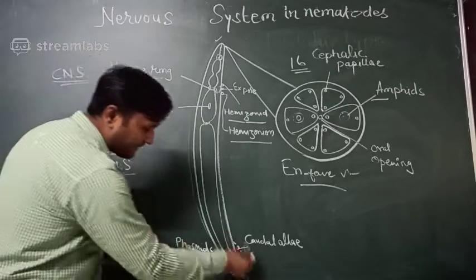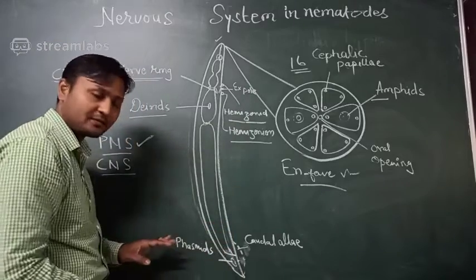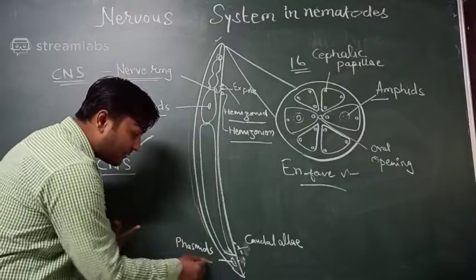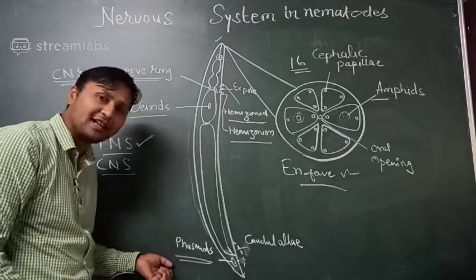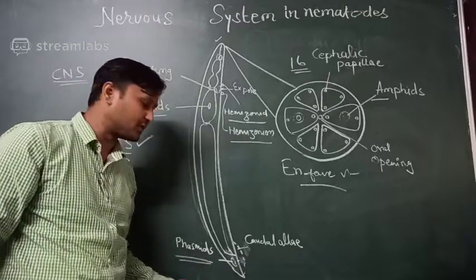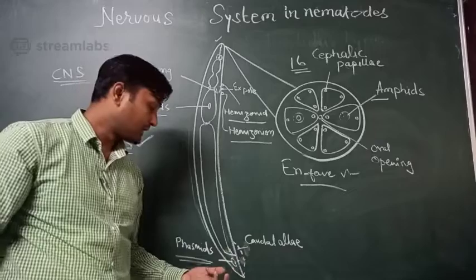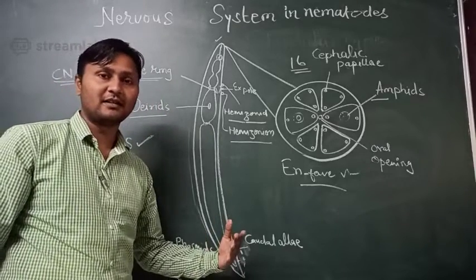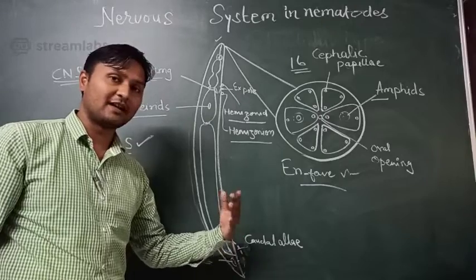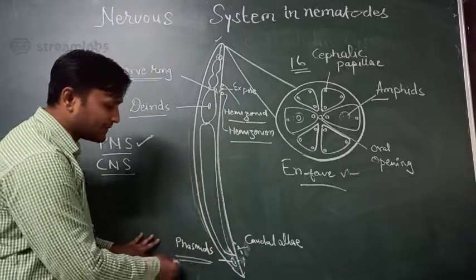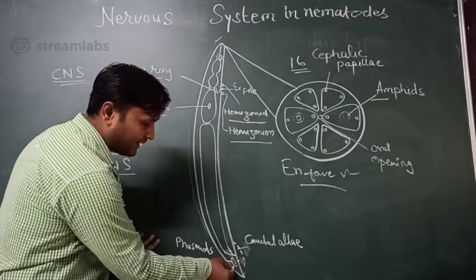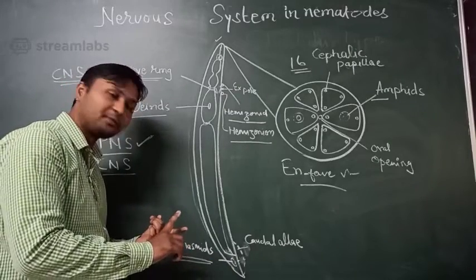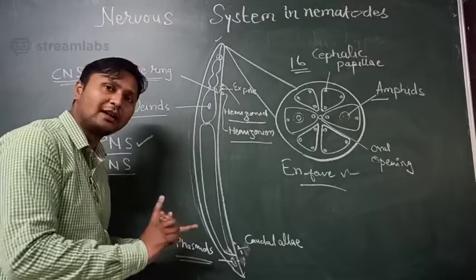Later in the tail region, there is a phasmid. One pair of phasmids is present on the tail, one on each lateral side. This is very important diagnostically — if phasmids are present, it means it is a plant parasitic nematode. If phasmids are not present, then the nematode belongs to the class Adenophorea.